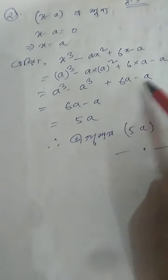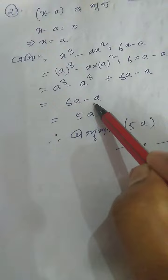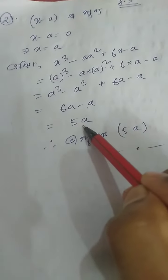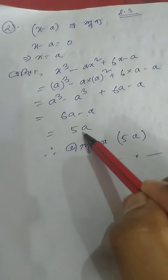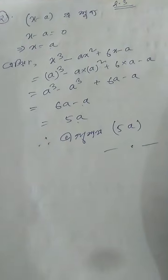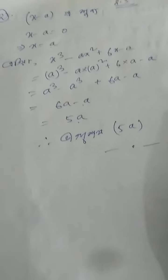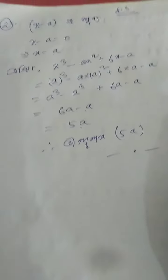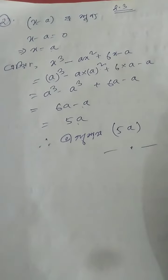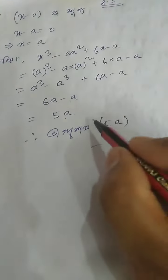6a minus a. So we set up a cube minus a. This is a cube minus a squared plus 6x minus a, giving a cube minus a squared.